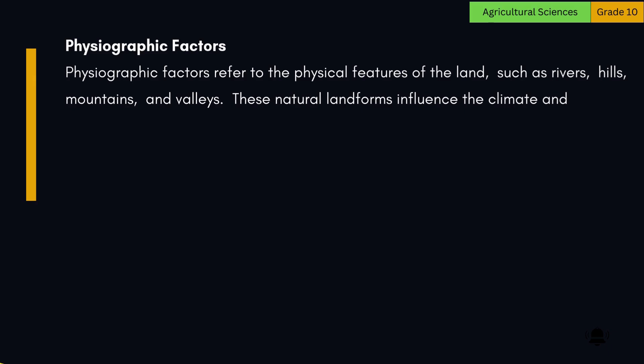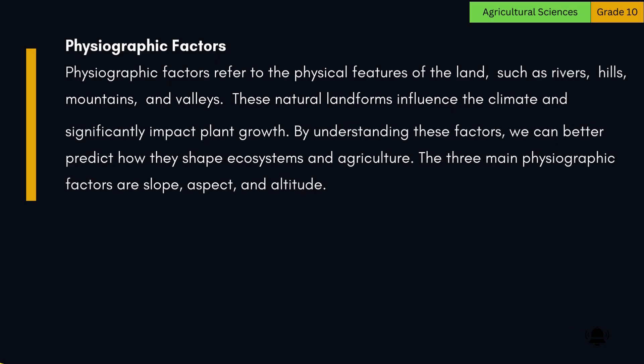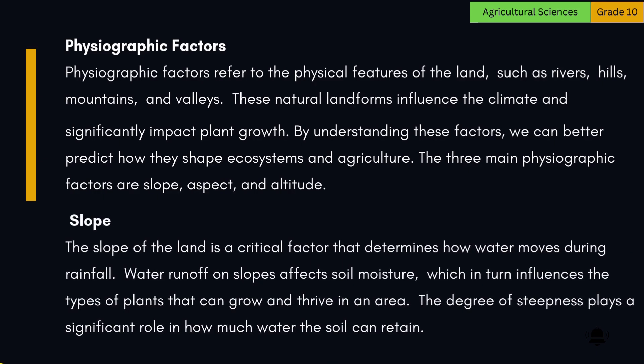Physiographic factors refer to the physical features of the land, such as rivers, hills, mountains, and valleys. These natural landforms influence the climate and significantly impact plant growth. The three main physiographic factors are slope, aspect, and altitude. The slope of the land is a critical factor that determines how water moves during rainfall. Water runoff on slopes affects soil moisture, which in turn influences the types of plants that can grow and thrive in an area. The degree of steepness plays a significant role in how much water the soil can retain.